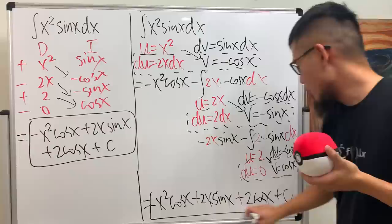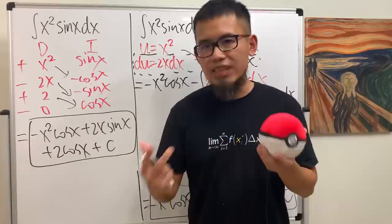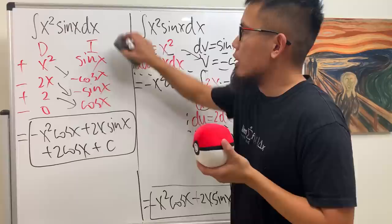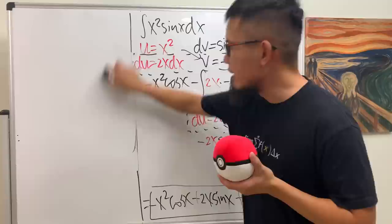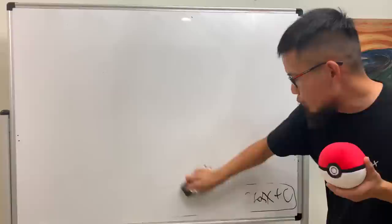This is very, very nice. The DI method — I prefer to call it the DI format — because I want to tell my students that this right here is just another format to organize your work for integration by parts. More importantly, you should know the three stopping conditions of the DI format. The first stop is when you have a 0 in the D column.